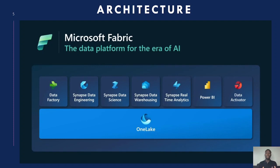This is the architecture of Microsoft Fabric, and it has been called the data platform of the era of AI. Apart from the fact that the interface is very friendly and low-code, you can expect Copilot to be integrated into Microsoft Fabric, making it a very seamless experience. The Fabric architecture has about seven experiences: Data Factory, Synapse Data Engineering, Synapse Data Science, Synapse Data Warehousing, Synapse Data Analytics, Power BI, and Data Activator, which is still in private preview.